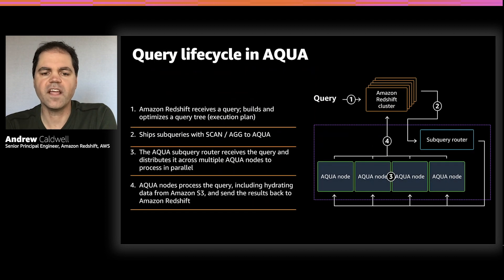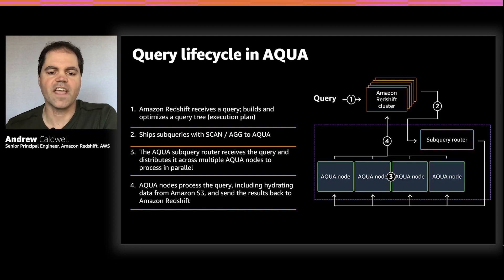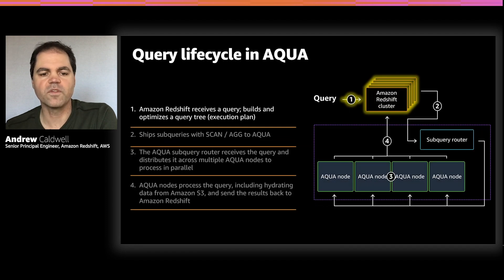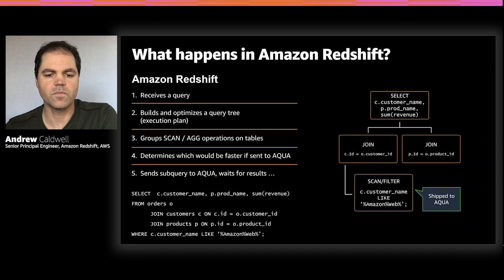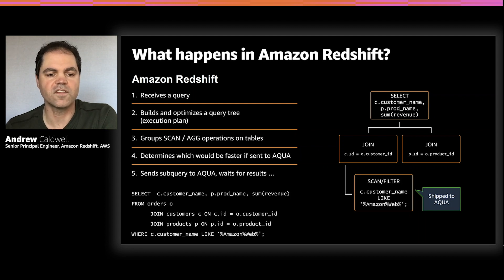To understand this more deeply, let's take a look at the life cycle of a query and see how Redshift leverages Aqua to accelerate the scan and aggregation portions — the parts of your query that demand high throughput. There are four stages of the query lifecycle, starting from your Redshift cluster. Redshift receives a query through any of the ways you submit queries today. Redshift controls security, authentication, and manages transactions exactly as it does today. Just like normally, it builds and optimizes a query execution tree, and then examines that tree to discover which portions will be better executed in Aqua. In this case, we see a LIKE predicate on the customer name column that's used to filter the other columns involved. That scan would be sent to Aqua for execution. Redshift's decision here is based upon an analysis of the contents of the subquery, the predicates and the data types involved, and other performance considerations.